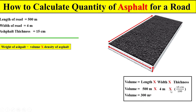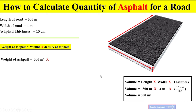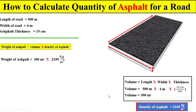If we multiply these three terms we can get the total volume of asphalt. Now, dear students, the weight of asphalt will be equal to total volume, which is 300 cubic meters, multiplied by the density of asphalt, which is 2330 kg per cubic meter. We multiply this volume with the density of asphalt so we can get the total weight of asphalt.